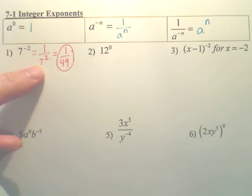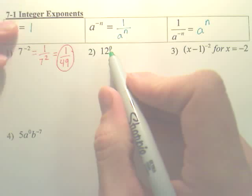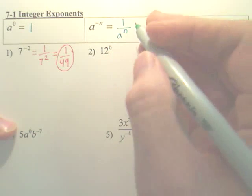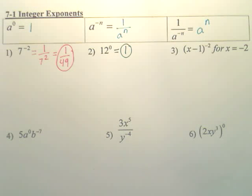Remember, all negative powers flip and then drop the negative. Okay, 12 to the 0. Well, according to this property, anything to the 0 is 1, so 12 to the 0 would also be 1. That's it. Another pretty simple problem.